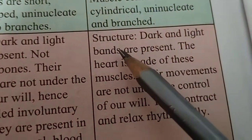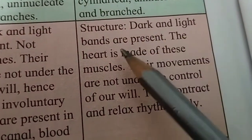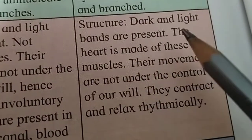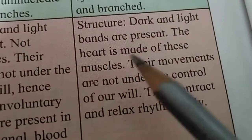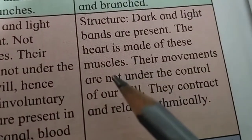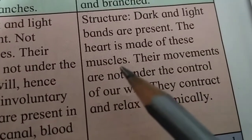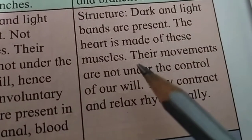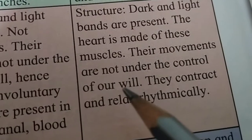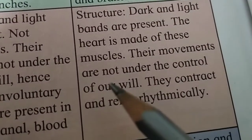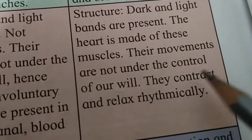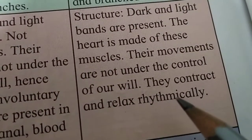Cardiac muscles have dark and light bands present. The heart is made up of these muscles, so they are called cardiac muscles. Their movements are not under the control of our will. They contract and relax rhythmically.